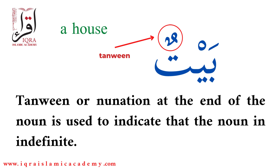You can see in the page: baitun — we have tanwin at the end of the noun. It means 'a house'; baitun means 'a house'. The tanwin is an indefinite article indicating that the noun we are speaking about is indefinite.